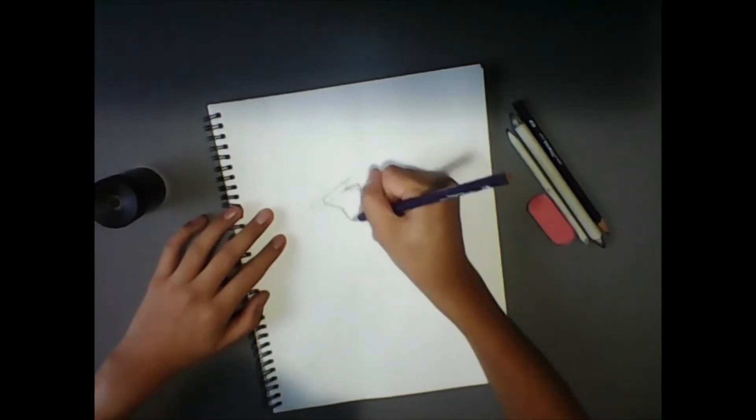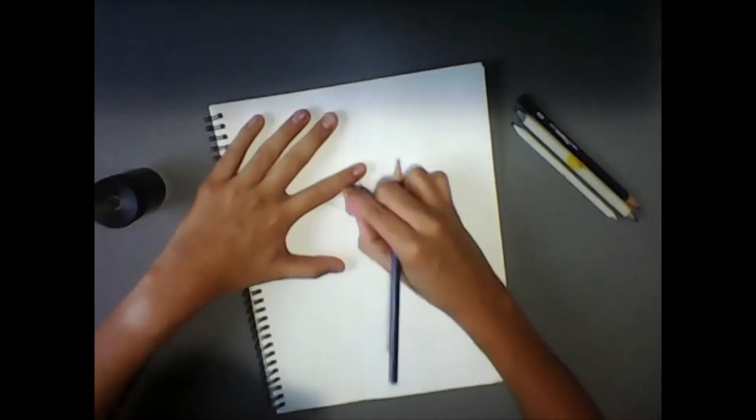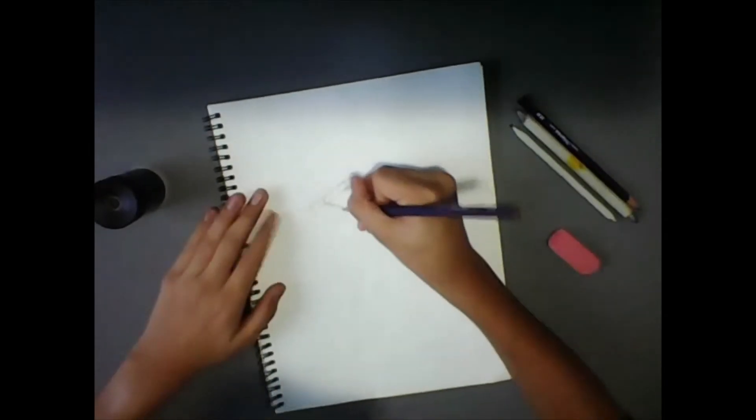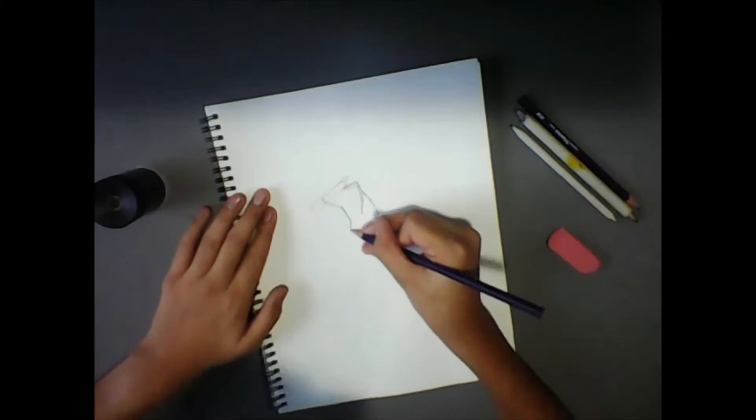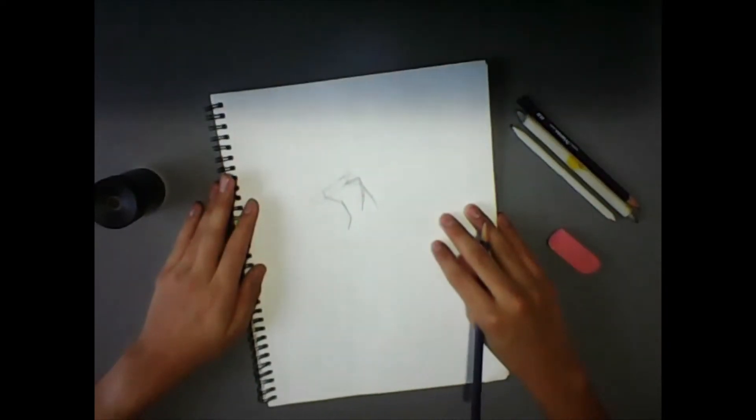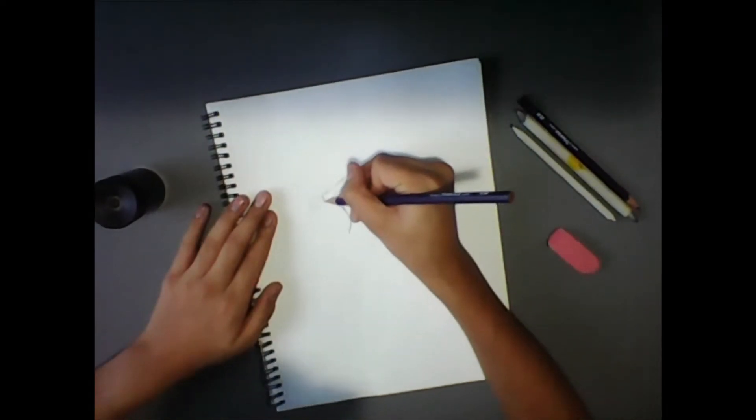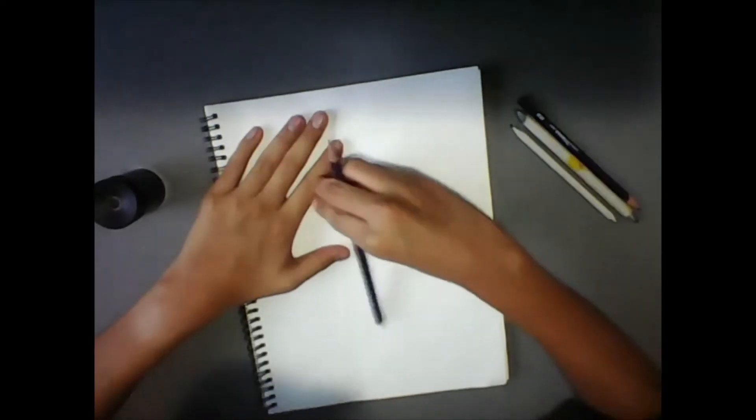The legs are basically just three segments. I apologize if it's shaky. The table's a little shaky. Under here. I think I made that a little too long. This one can be... Oh. Too thick.